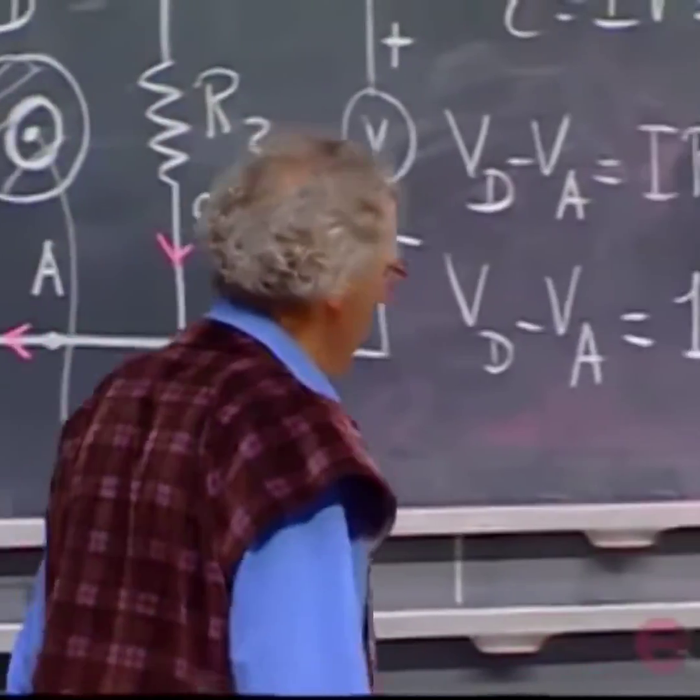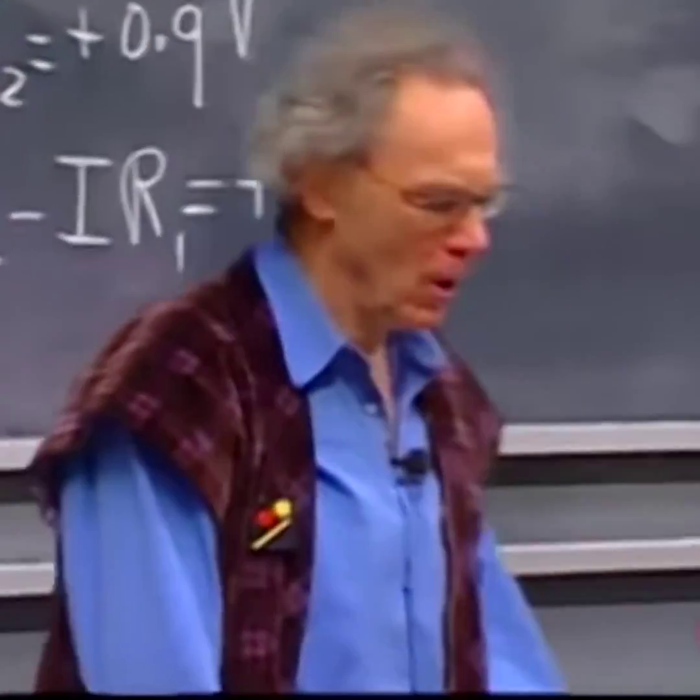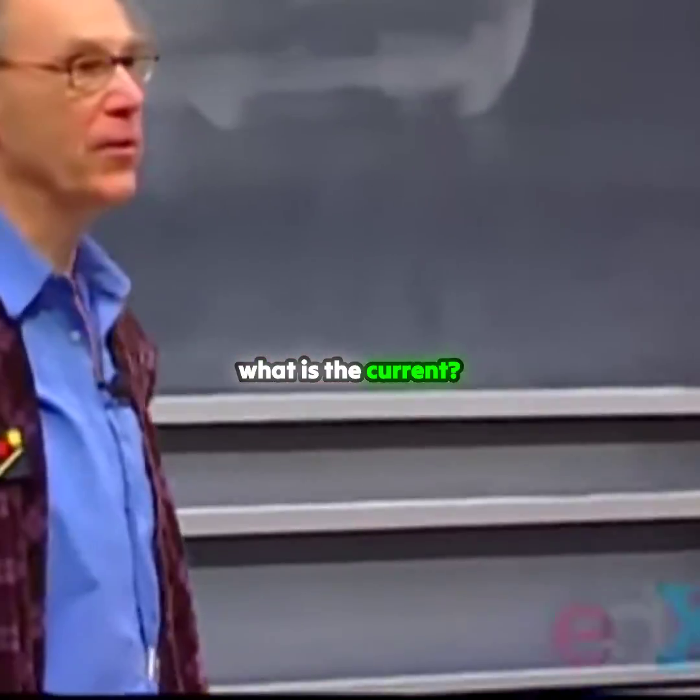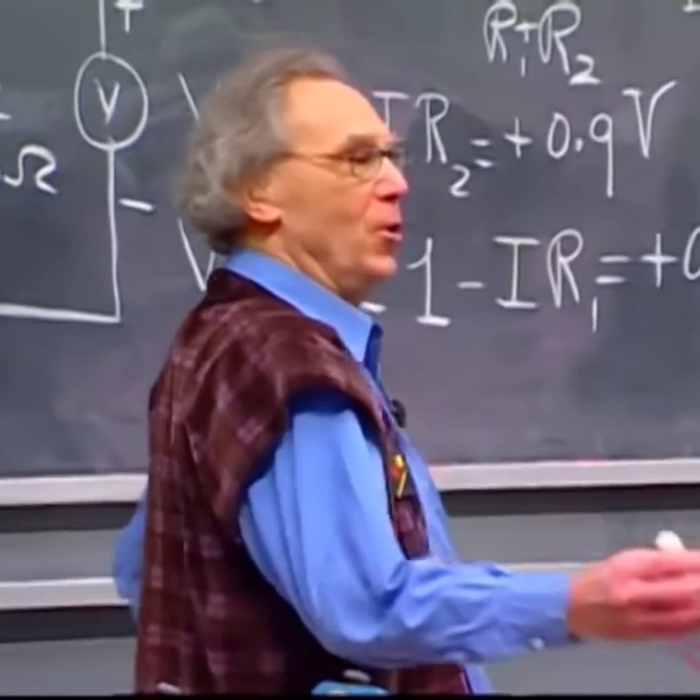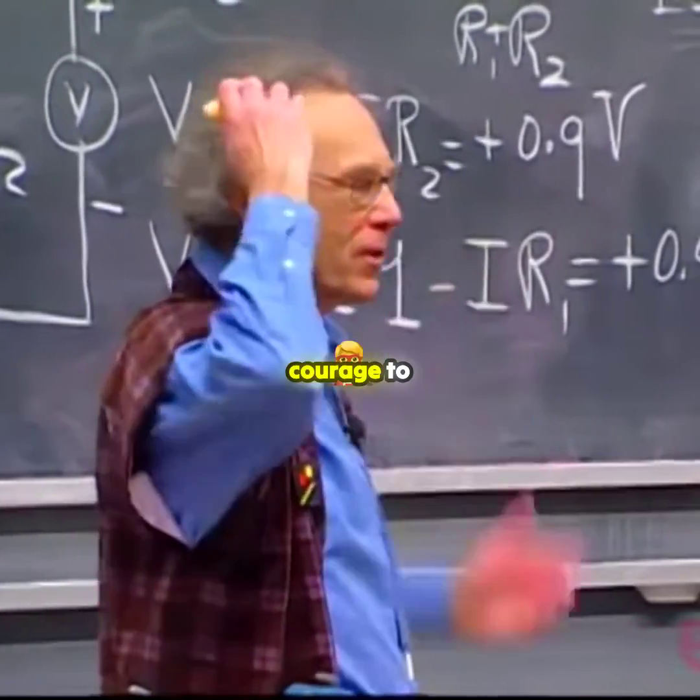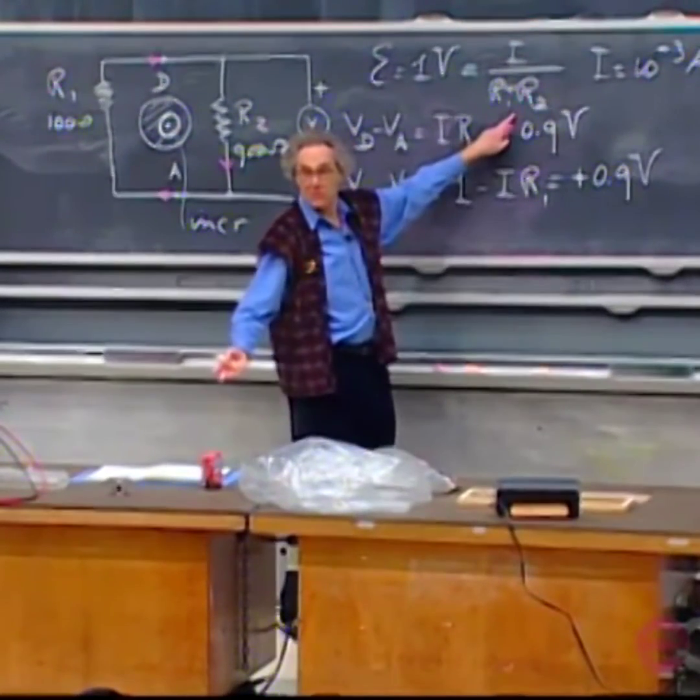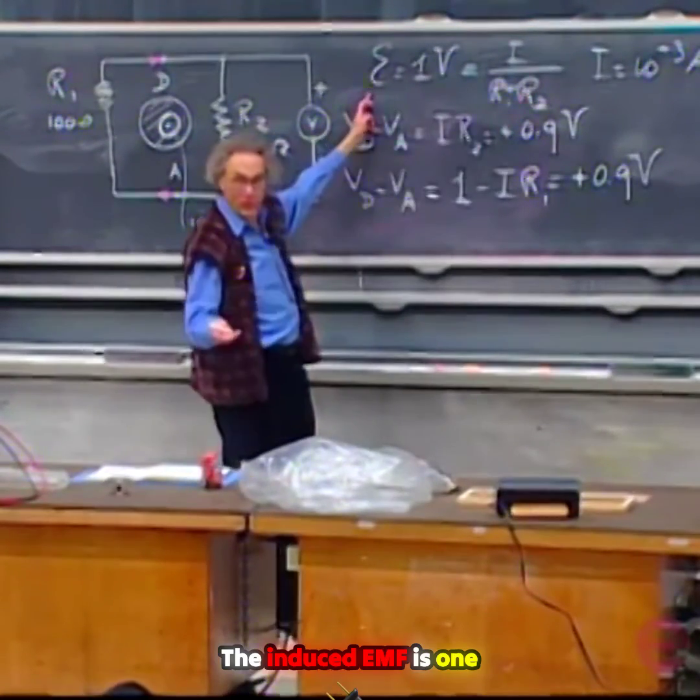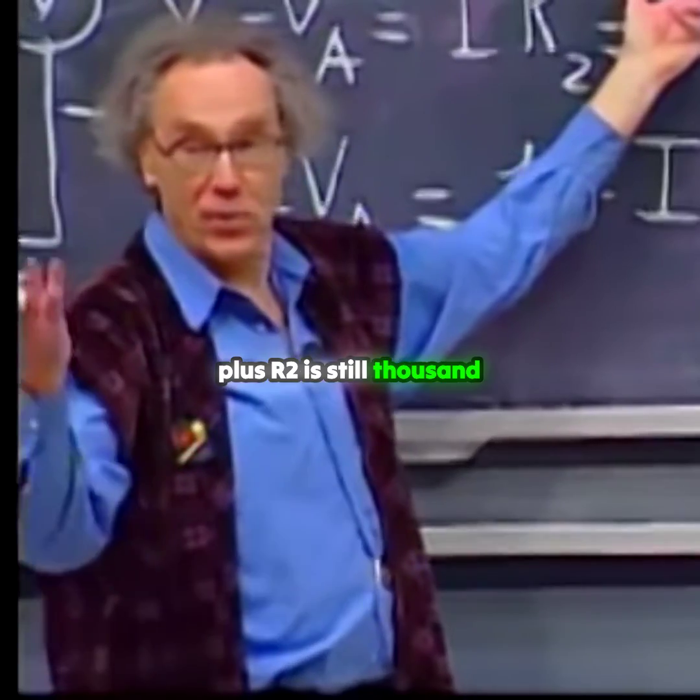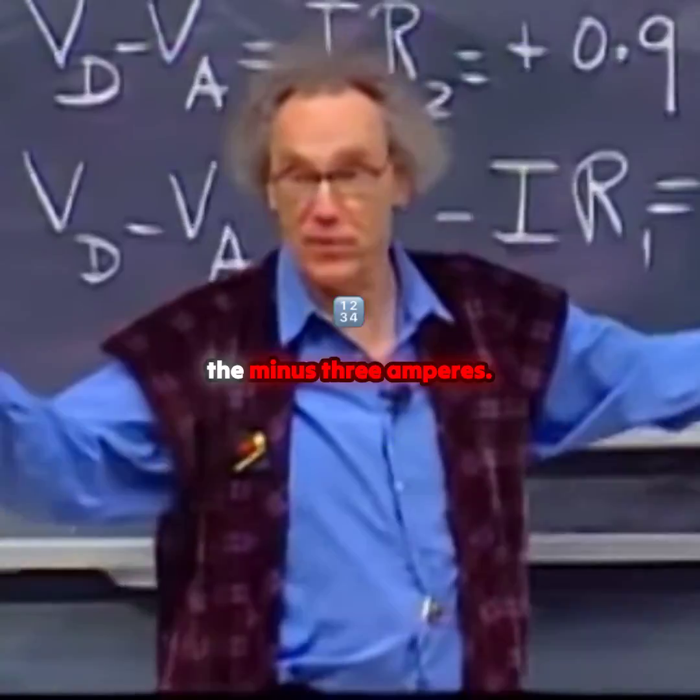So now, I ask you, what is the current? Well, you'll be surprised that I even have the courage to ask you that, because Ohm's law holds. The induced EMF is one volt, and R1 plus R2 is still thousand ohms, so ten to the minus three amperes.